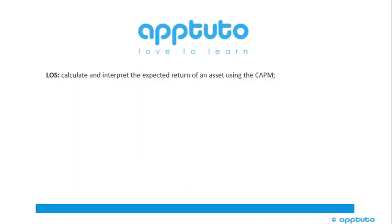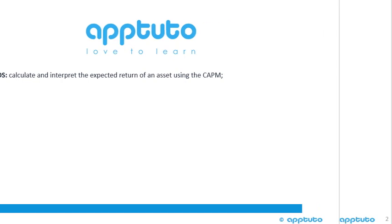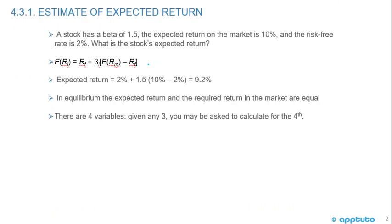This LOS is to calculate and interpret the expected return of an asset using the Capital Asset Pricing Model, CAPM. Recall the CAPM formula: the expected return on the security equals the risk-free rate plus the beta of the security times the expected return of the market minus the risk-free rate.